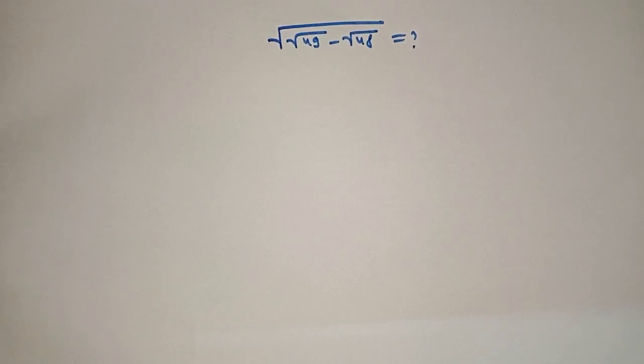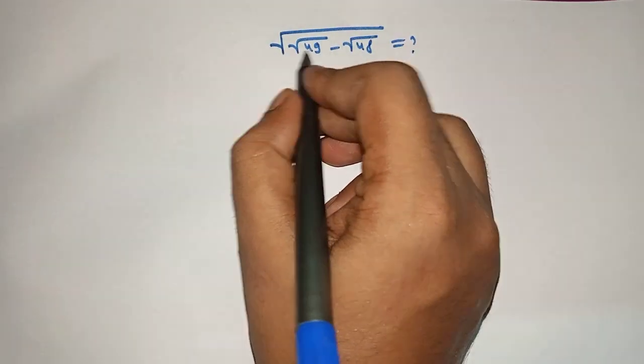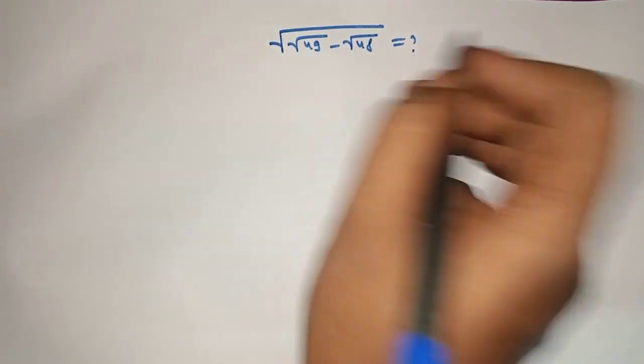Hello friends, welcome to aha math. Square root of square root of 49 minus square root of 48 is equal to what?